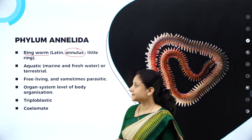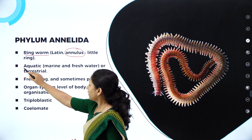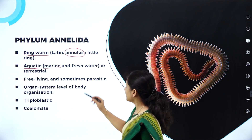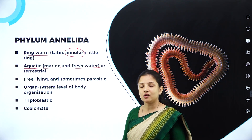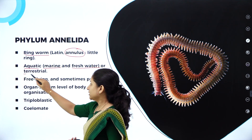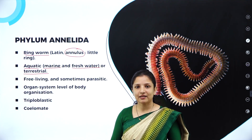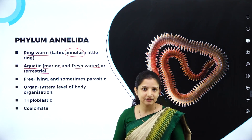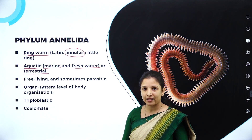They have segments. Talking about the habitat, they are aquatic — they can live in marine habitats such as seas and oceans, and in fresh water such as ponds, rivers, and lakes. Some of them can be terrestrial as well, such as earthworms and leeches. Aquatic annelids include Nereis, which is one of the best examples of an aquatic annelid.